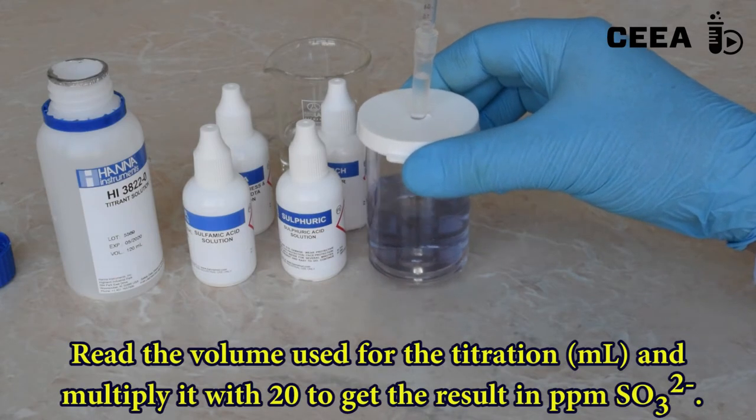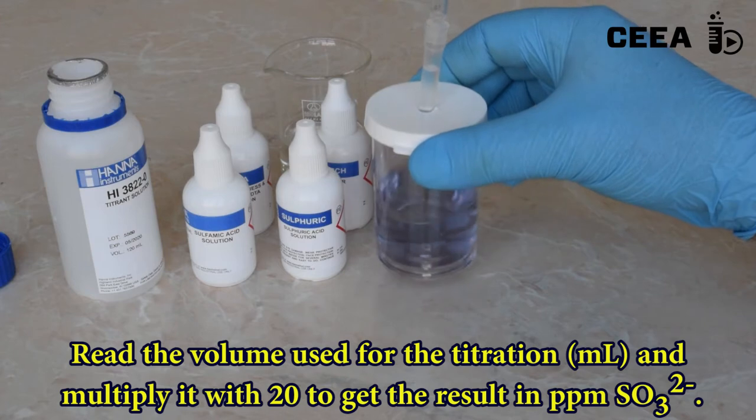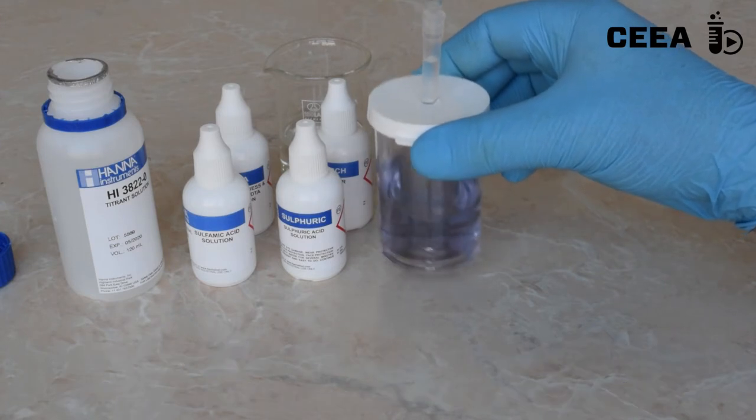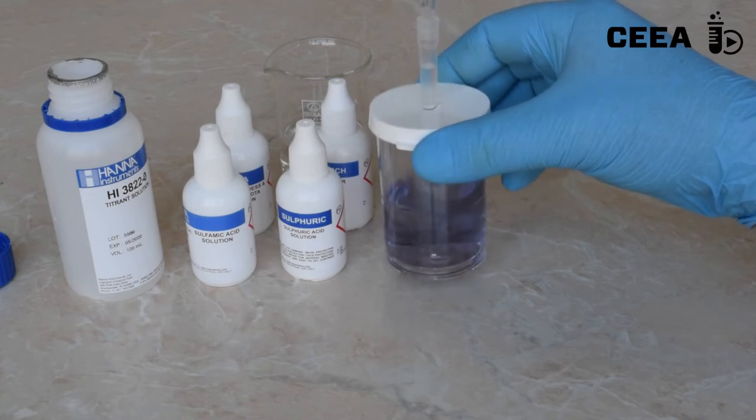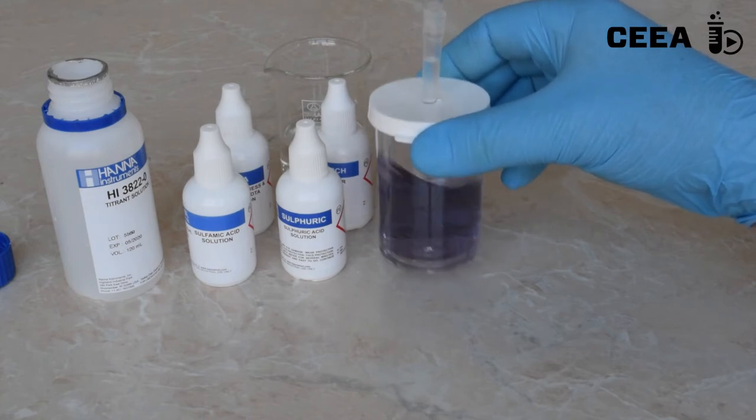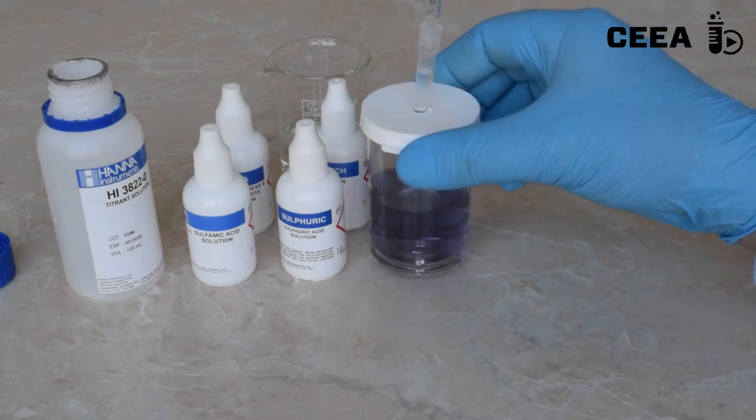The solutions used are of determined concentration, so the content of the sulfites can be calculated by multiplying the volume of iodide-iodate solution with 20.